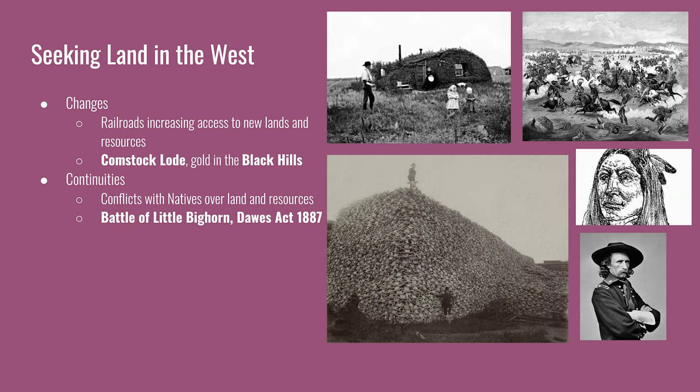Conflict with Native Americans over land was nothing new, though the group being displaced was different than in previous periods. Plains Indians, primarily the Sioux, resisted American expansion and the killing off of their primary resource, the bison. One major battle in which the Sioux were victorious was the Battle of Little Bighorn, though by the end of the century most tribes had been weakened and forced onto reservations. The major legislation that dispossessed Native Americans of much of their land was the Dawes Act of 1887. It split up all American Indian land and distributed it among heads of households to force American Indians to abandon communal property practices. The leftover land was sold to white settlers without any say from the tribes affected.